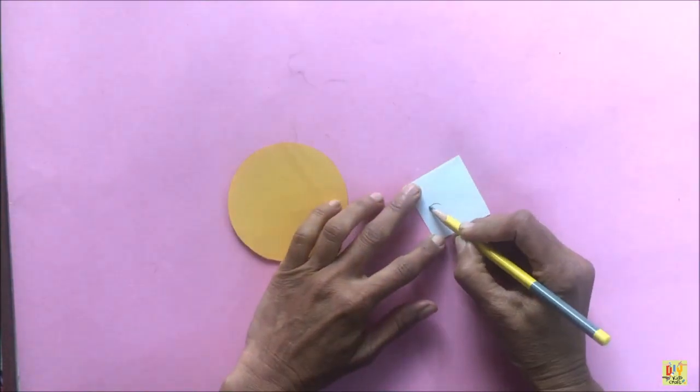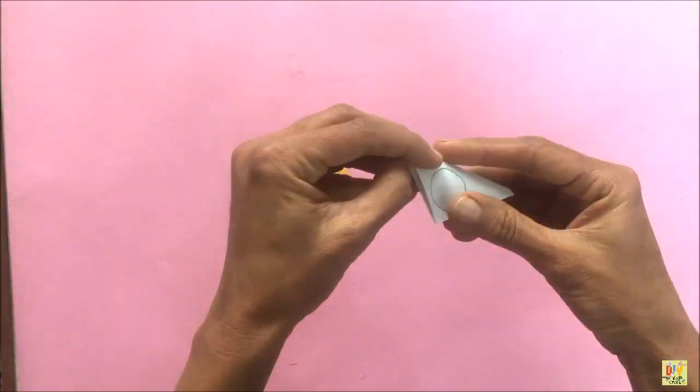Then, get a small piece of white paper and draw two small circles for the whiskers.